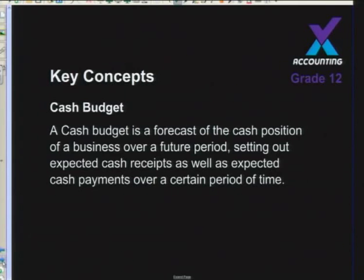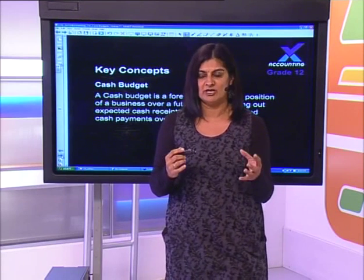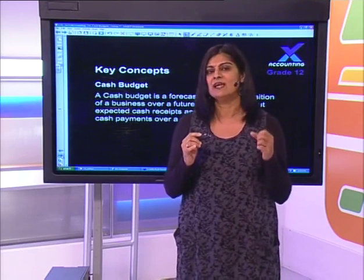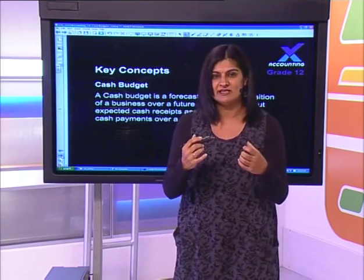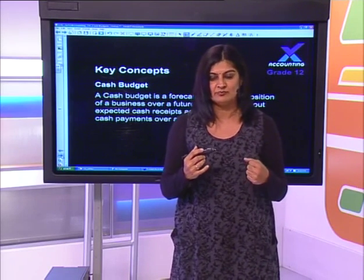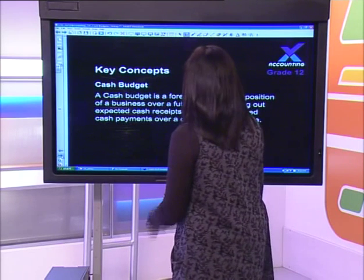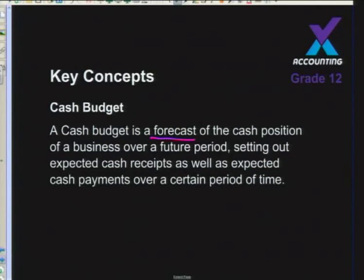The first question: what is a cash budget? The term cash deals with receiving money versus spending that money, making certain payments. The actual definition of a cash budget - it is a forecast. The word forecast means you're looking into the future, trying to predict the cash position of a business over a future period of time.